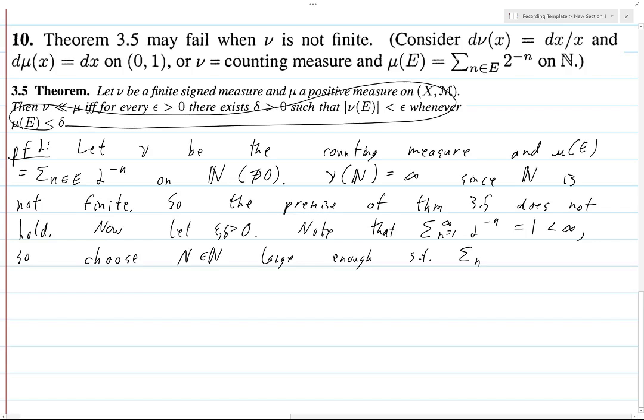So, anyways, sum from N equals capital N to infinity of 2 to the minus lowercase n. So, again, let's draw it like an English letter is less than delta.